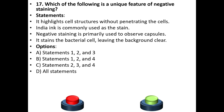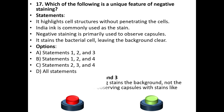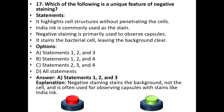The correct answer is A: statements 1, 2, and 3. Explanation: Negative staining stains the background, not the cell, and is often used for observing capsules with stains like Indian ink.